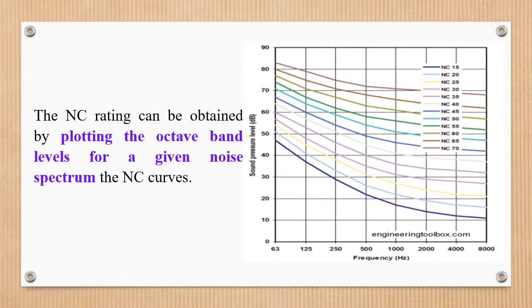Look at this picture. This picture shows different sound pressures, decibels and frequencies. The noise criteria rating can be obtained by plotting the octave band levels for a given noise spectrum — that is the noise curves which are clearly represented in this picture. These are various kinds of sound pressure levels which have different frequencies.